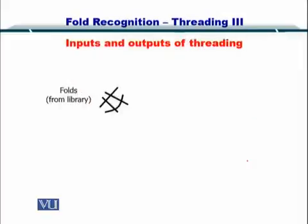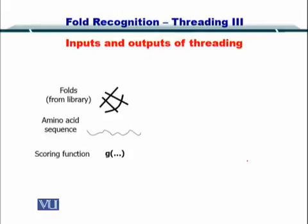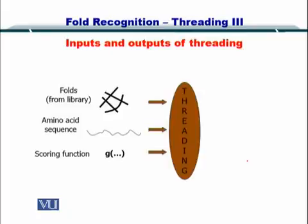Let's look at the inputs and outputs first. The inputs are the folds from the fold library such as SCOP, the amino acid sequence — the primary sequence of the protein you want to predict the structure for — and the scoring function. These are input into your threading algorithm, and the output is your predicted structure.